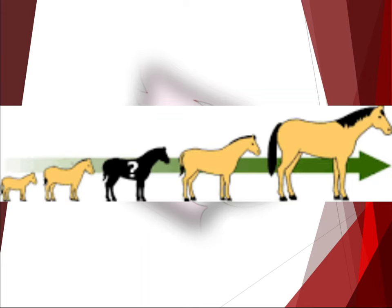One thing all scientists agree on is that there are gaps in the fossil record. Some of these gaps have been filled in by missing links or transitional fossils; other gaps are still there and unexplained. Because the fossil record is incomplete, scientists also rely on things other than fossils — such as molecular, genetic, or anatomical evidence — to support the different theories of evolution.